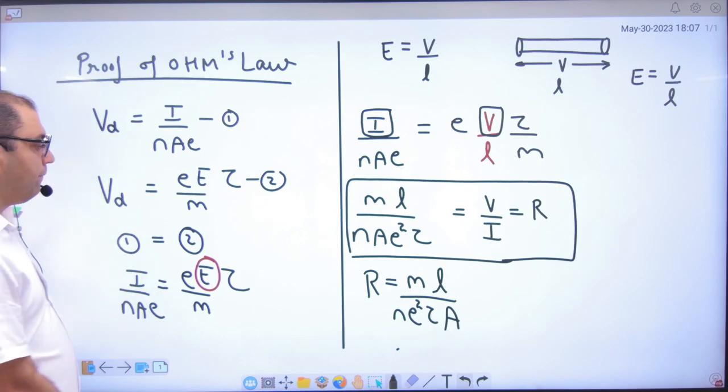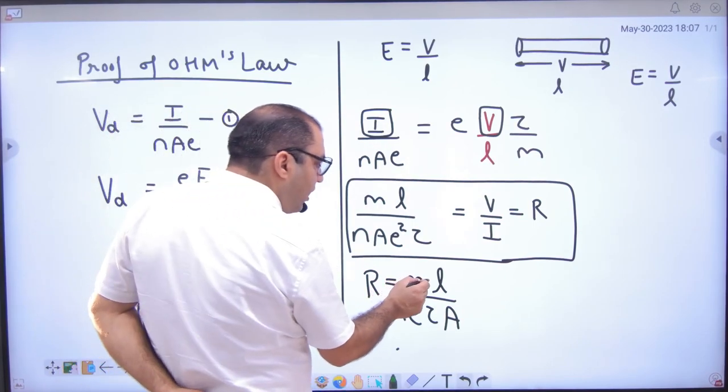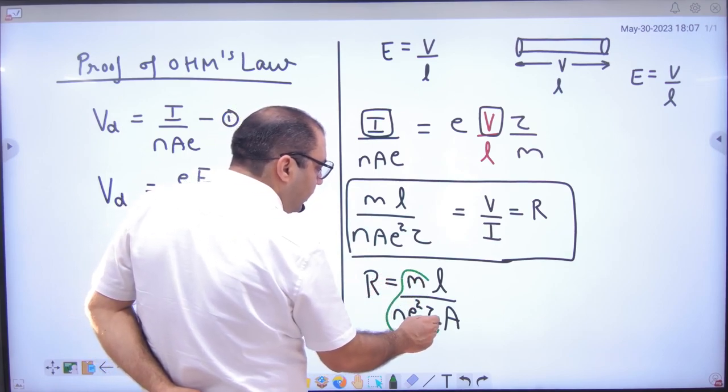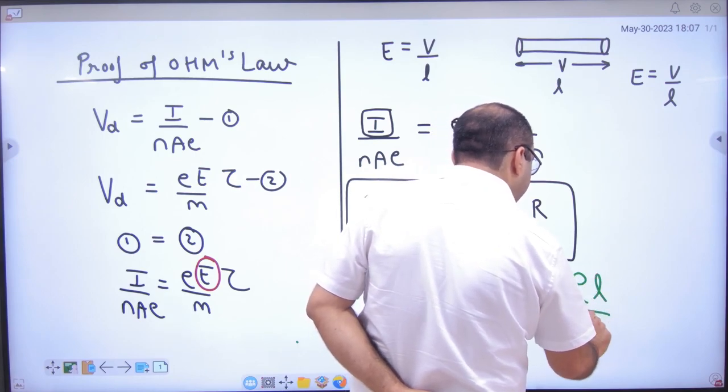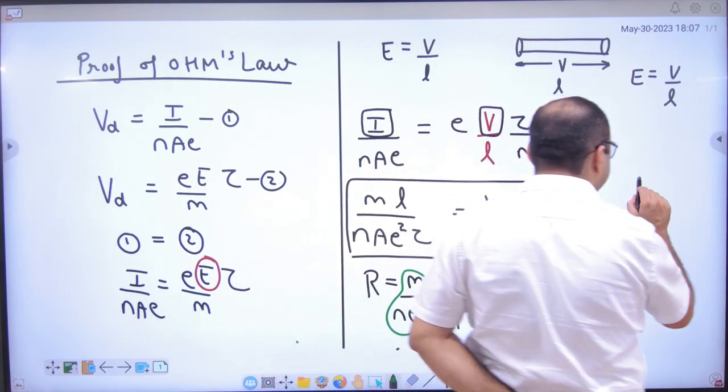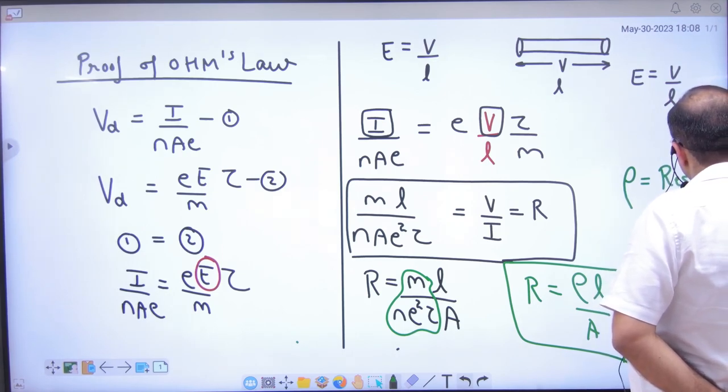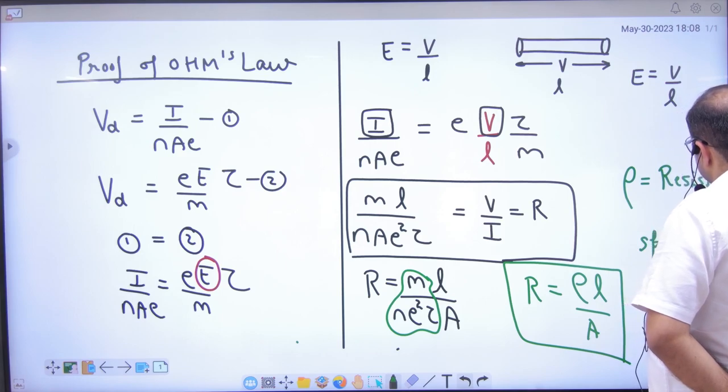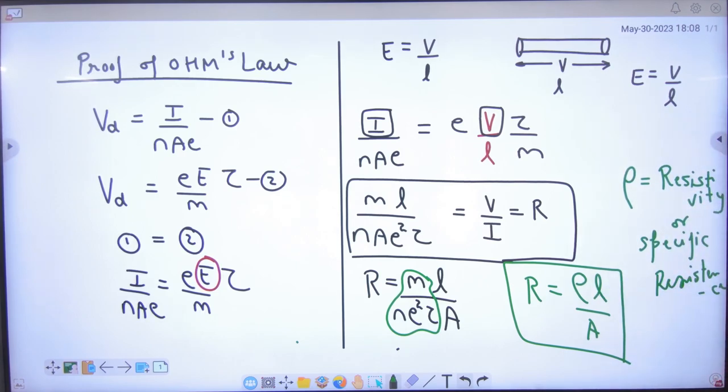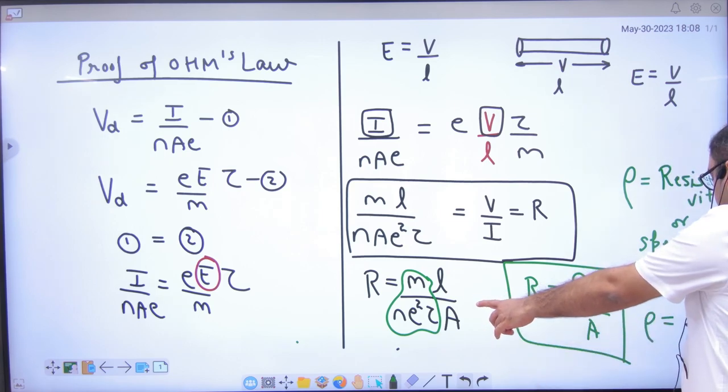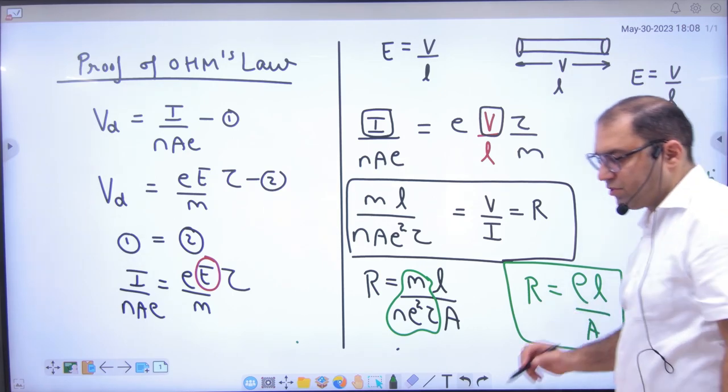And this another thing that for a given wire, M does not change, or E, or Tau. So this term I will write rho L by A. This formula resistance note, where rho is known as resistivity, resistivity or specific resistance. Specific resistance or resistivity, resistivity formula note: this term M divided by N E square into tau is resistivity. Resistivity note karen please.